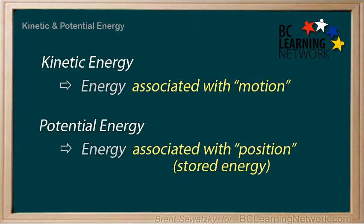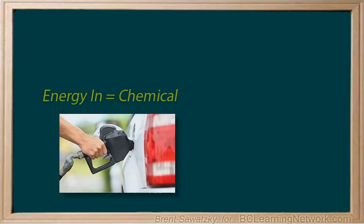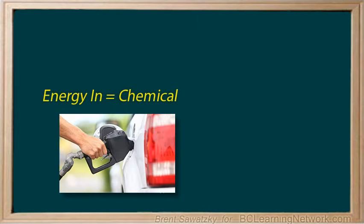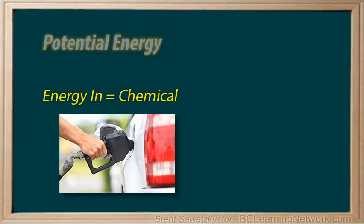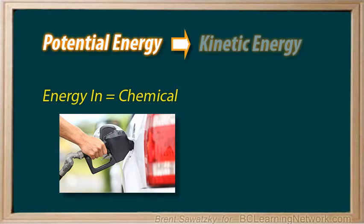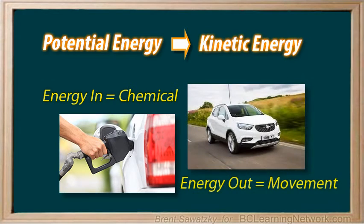Let's consider some examples and categorize the energies involved. Cars convert chemical energy, which is energy stored in gasoline, or potential energy, into kinetic energy — the car moving. So the car's main job is to convert potential energy into kinetic energy.